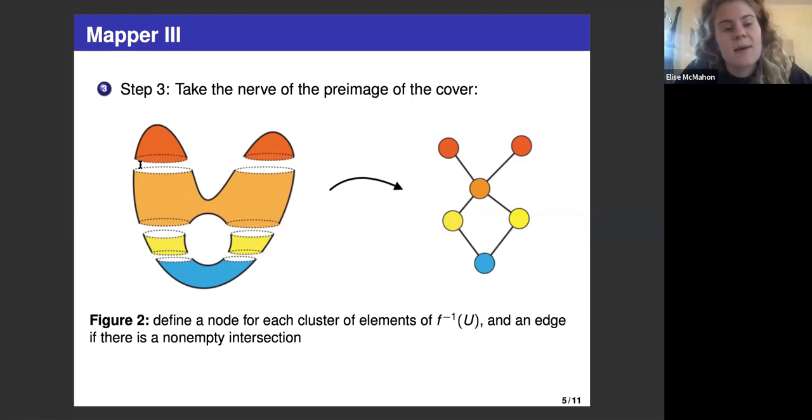The last step is to take the nerve of the preimage of the cover. If you don't know what the nerve is, it's just the simple step of taking for each node, we'll define a node for each cluster of elements in the preimage. If we're looking at this red blob on the right, it's all in one cluster, so it gives one node.